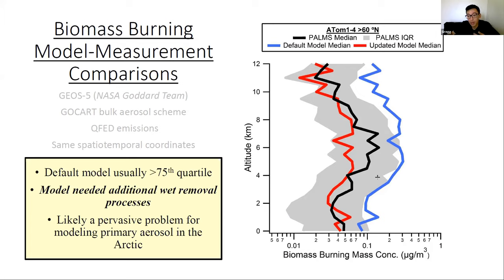By running sensitivity tests, we found we need additional wet removal processes for aerosols in the model. When we added those, the updated model — shown as the red line — reproduces both the magnitude of the observations and the shape of the vertical profile, which is quite important.